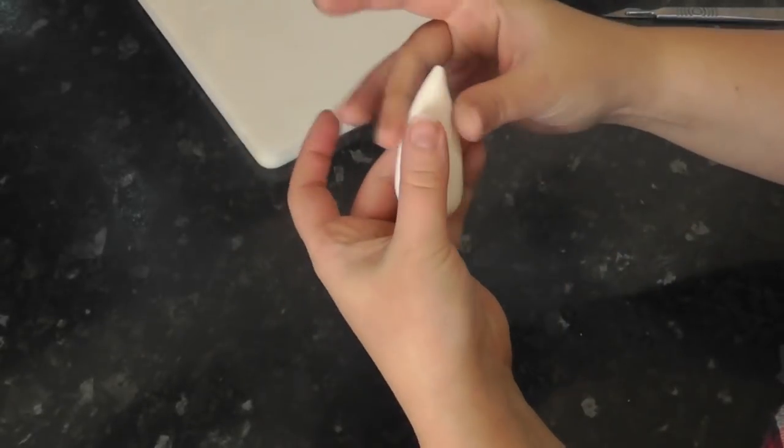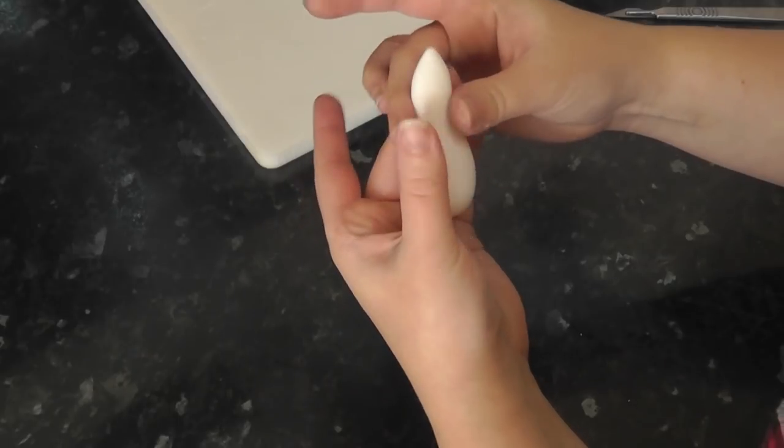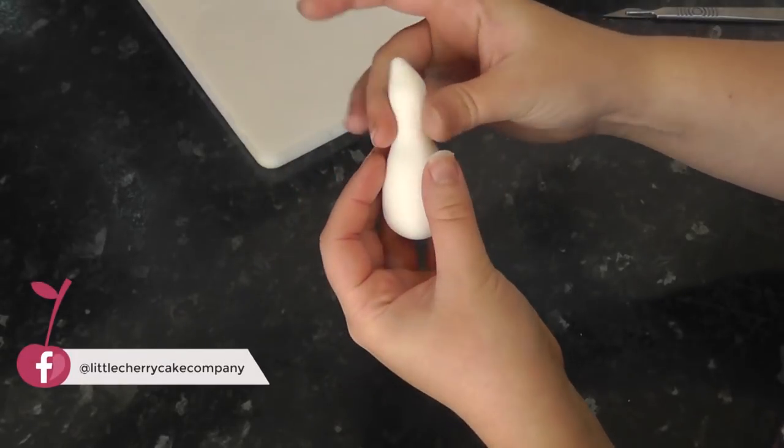Roll a ball into a cone shape between your hands in white. Pinch and tease the top of the cone into a slim neck and trim off the top.